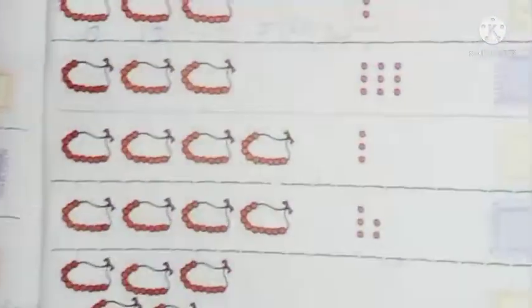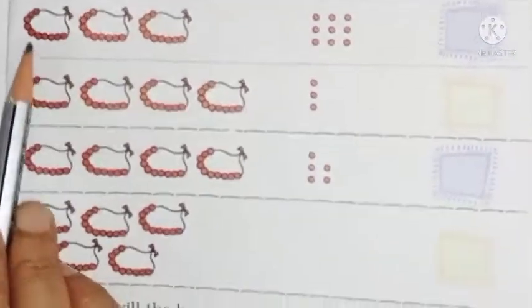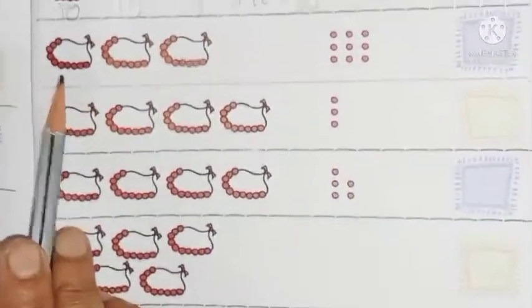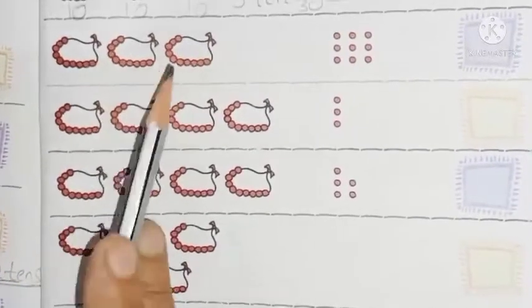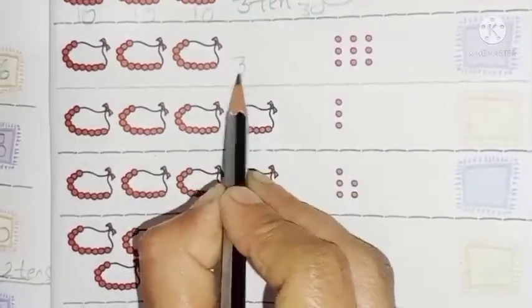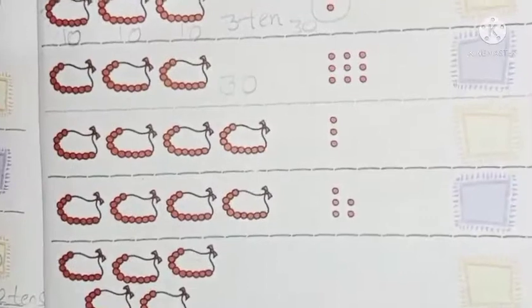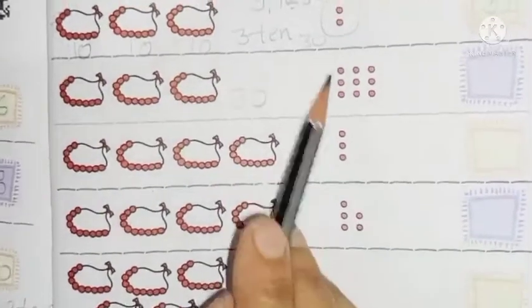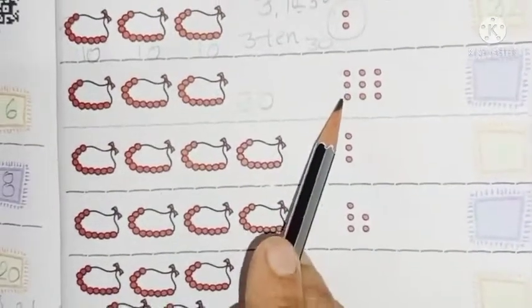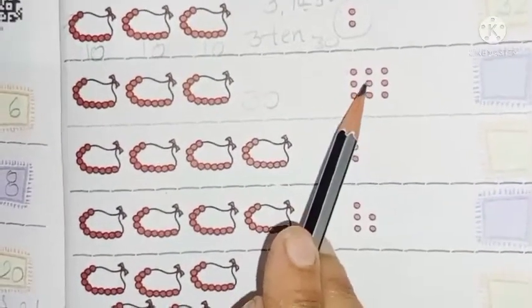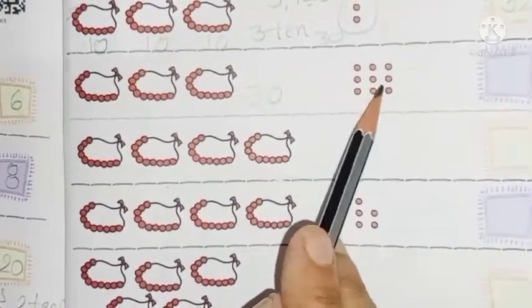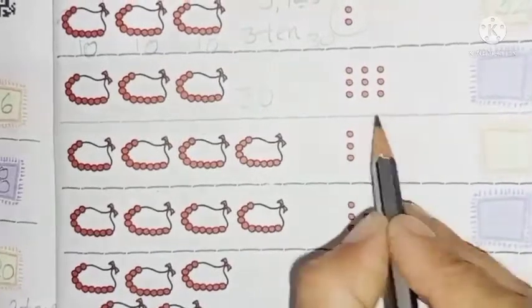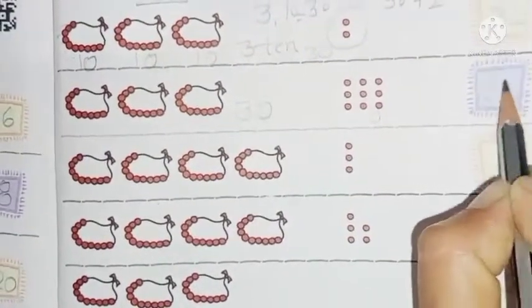So children, I have explained this. Now look at the next one. Again, this is 1 ten, this is 2 ten, this is 3 ten — so how much? 30. Now look at the 1s: 1, 2, 3, 4, 5, 6, 7, 8, 9. So 30 plus 9 equals 39. 9 are the 1s and 3 are the 10s.